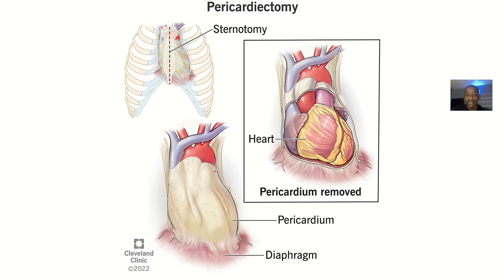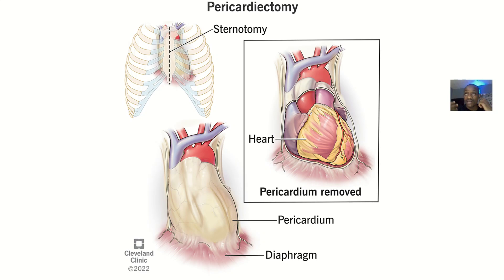The pericardium is the tissue surrounding the heart. So you are essentially trying to skin the heart — just like when you skin a cow — you are removing the covering of the heart.